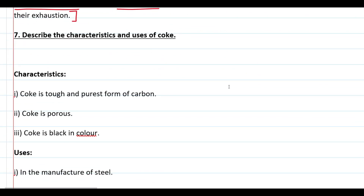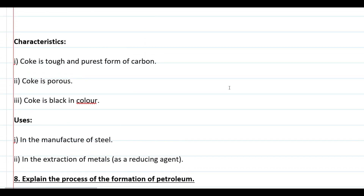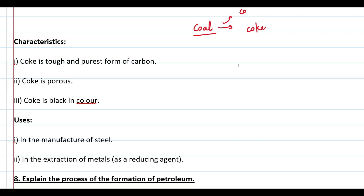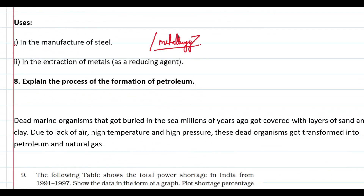Describe the characteristics and uses of coke. Characteristics: coke is the purest form of carbon; it is formed when coal is processed; coke is tough and porous — it has small holes; coke is black in color. Uses: coke is used in manufacturing of steel, in metallurgy, in extraction of metals from their ores as a reducing agent.